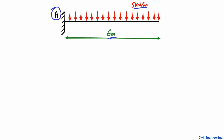Finding the support reaction for a cantilever beam is really easy. You just have to find out the total load acting on the beam. At the fixed support A, the reaction RA acts in the vertical direction. It can also take a horizontal reaction RA_X, and it can resist moment. Since there is no horizontal load acting on the beam, RA_X will be equal to zero.